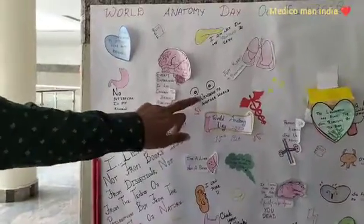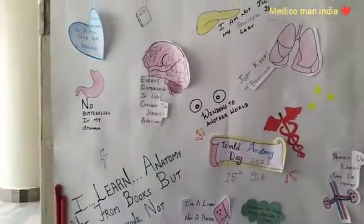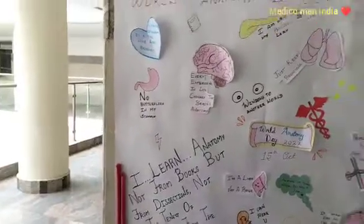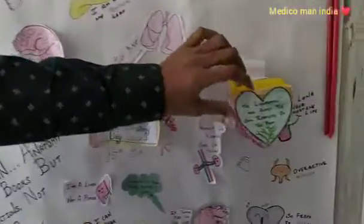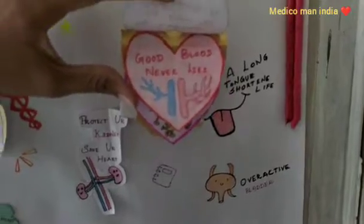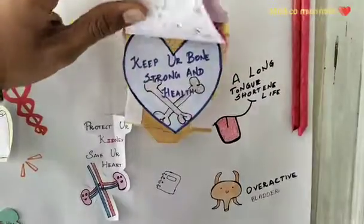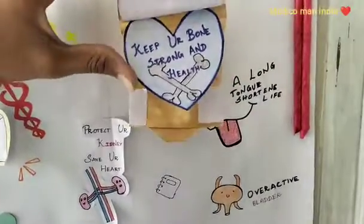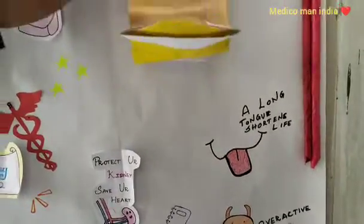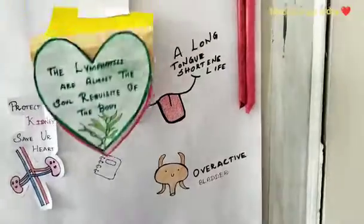Next: 'Eyes are the windows to another world.' Next: 'No butterflies in my heart' — this is a little naughty point. You have some lymphatics here. 'Good blood never dies.' 'Nerves are nature.' 'Keep your bones strong and healthy.' 'A long tongue shortens life.'